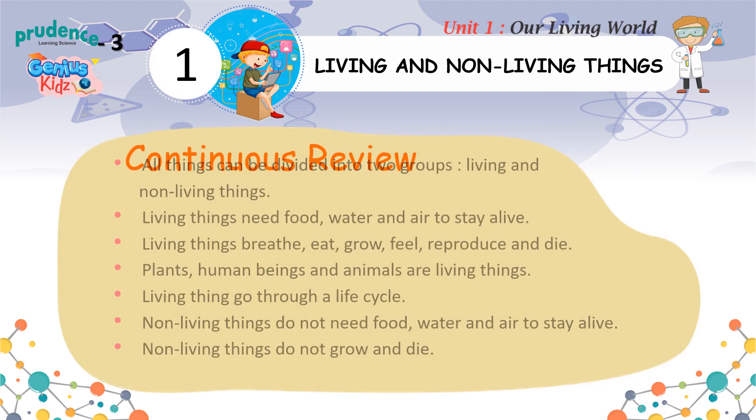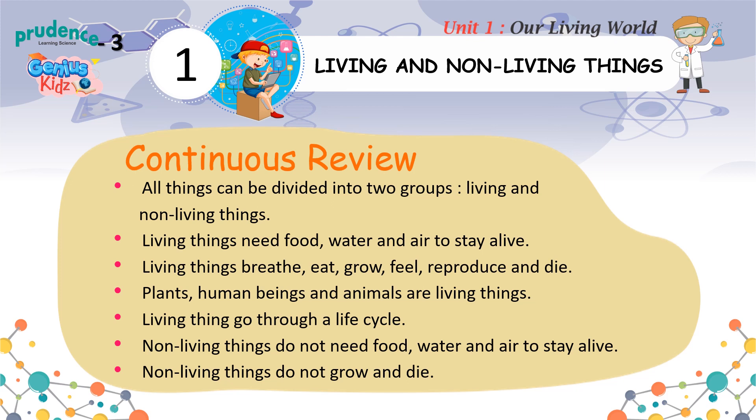Continuous review: All things can be divided into two groups — living and non-living things. Living things need food, water and air to stay alive. Living things breathe, eat, grow, feel, reproduce and die. Plants, human beings and animals are living things. Living things go through a life cycle. Non-living things do not need food, water and air to stay alive. Non-living things do not grow and die.